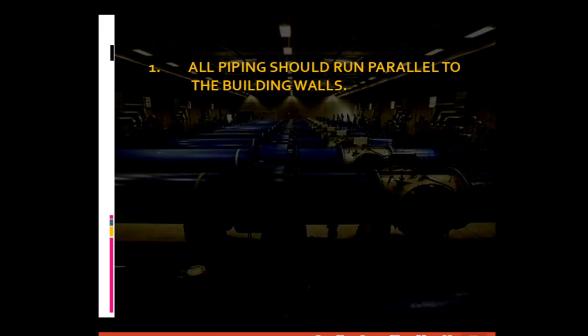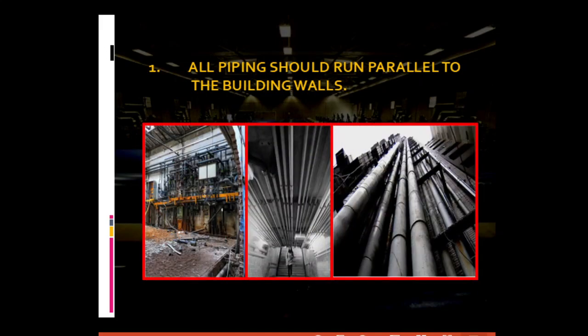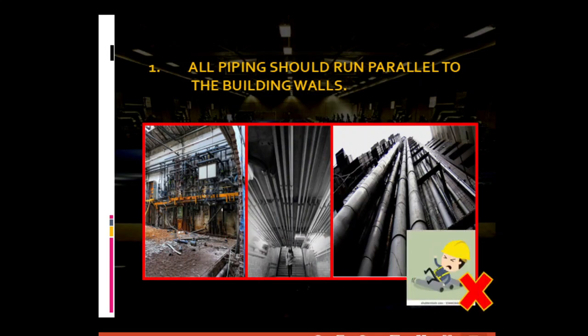For general piping requirement number one: all piping should run parallel to the building walls. As can be seen from the picture, this guideline ensures that available space is maximized. Also, pipes arranged in such an orderly manner prevent tripping accidents or hazards as pipes do not interfere with walkways or aisles. Lastly, this requirement is considered for aesthetic purposes, as pipes constructed in such manner would not be an eyesore and contribute to the well-being of the personnel.